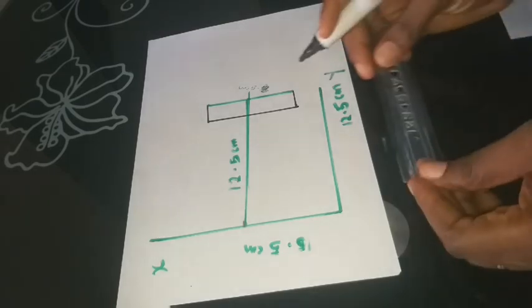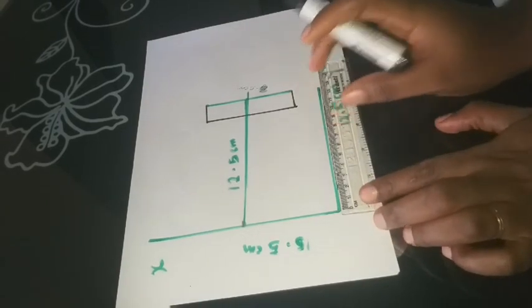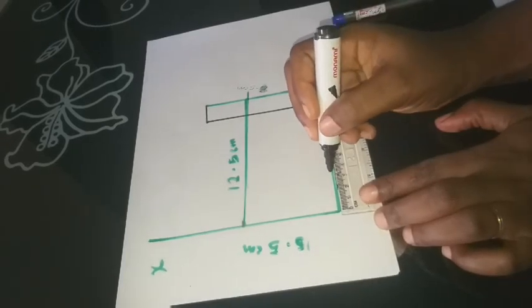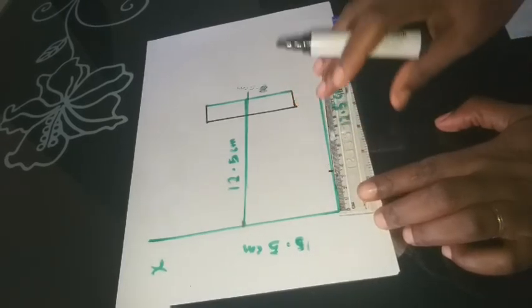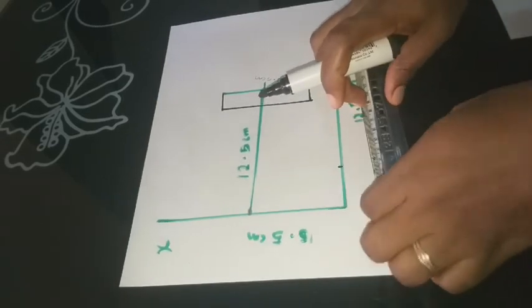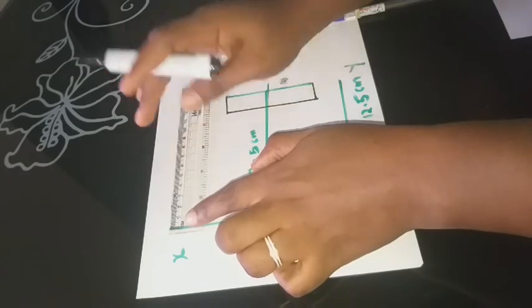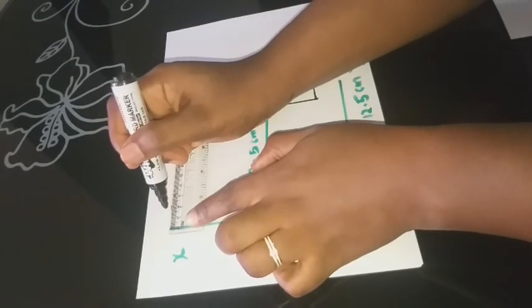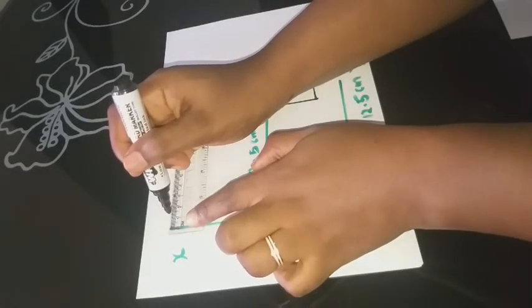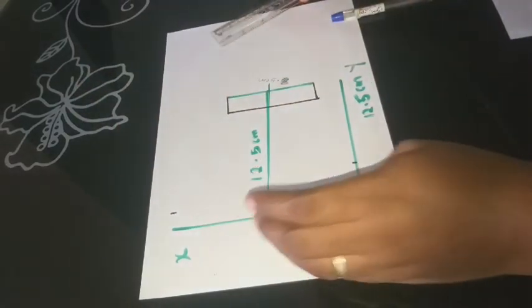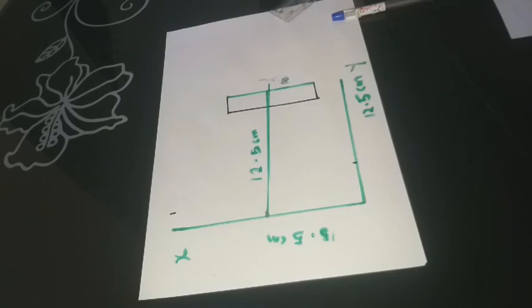Now we're just going to mark 3.5 cm from the end of my Y axis line, and I'm also going to mark 1.5 cm from the top of my X axis line. I'm just going to make that point very visible as you can see.